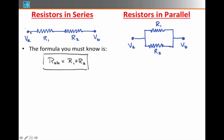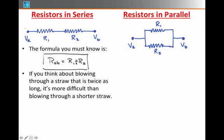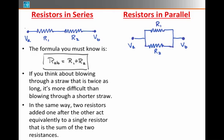In other words, the equivalent resistance as I go from point A to point B is just the sum of these two. If you think about blowing through a straw that's twice as long, it's more difficult than to blow through a single shorter straw. In the same way, it's difficult to shove current through two long resistors end to end as compared to just throwing current through one resistor all by itself. In the same way, two resistors often act together equivalently as a single resistor that's the sum of the two resistances.